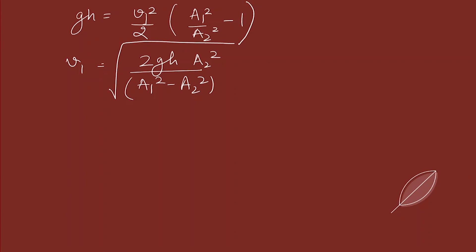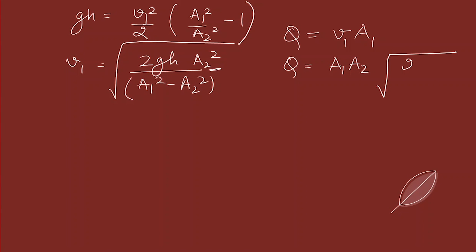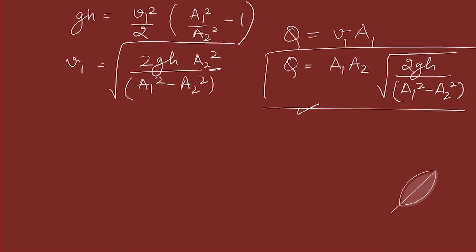Taking the square root gives v1, and the flow rate Q equals v1 times a1. Substituting the expression for v1, the final result is Q = a1·a2 · √(2gh / (a1² - a2²)). This is the derived expression for the venturimeter flow rate.